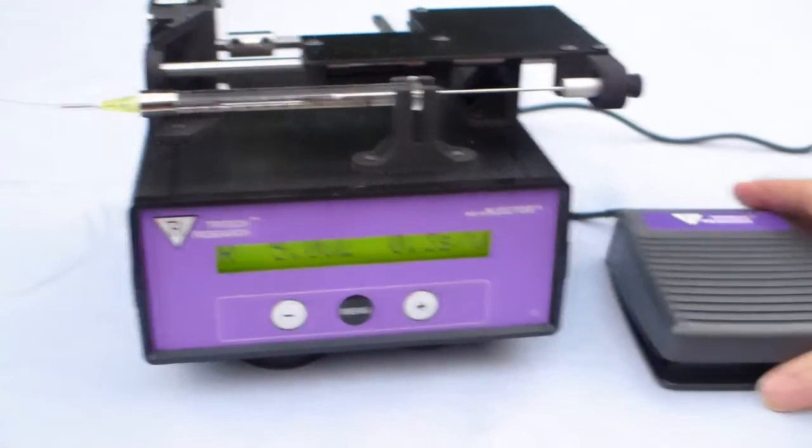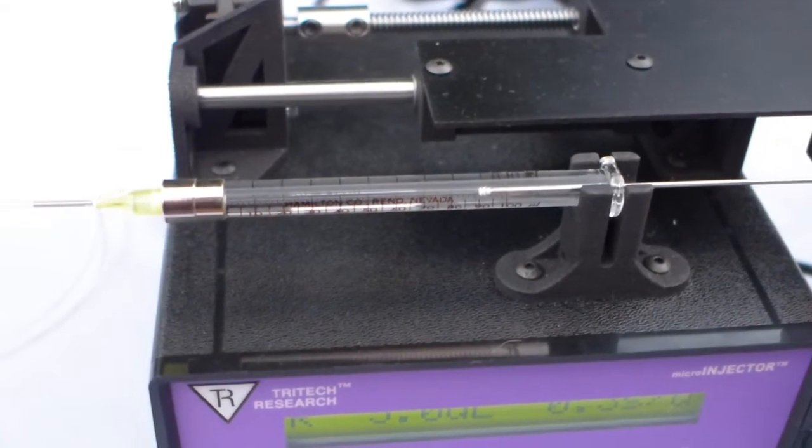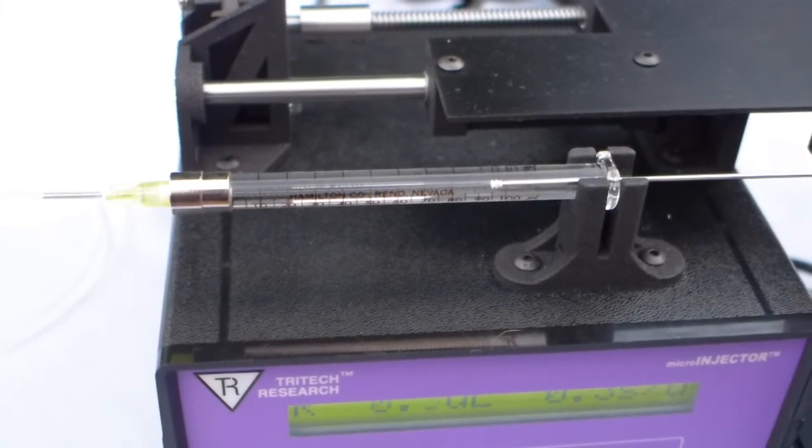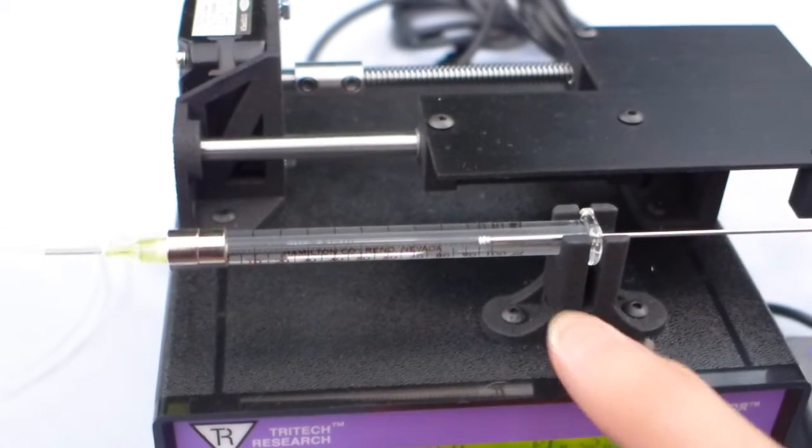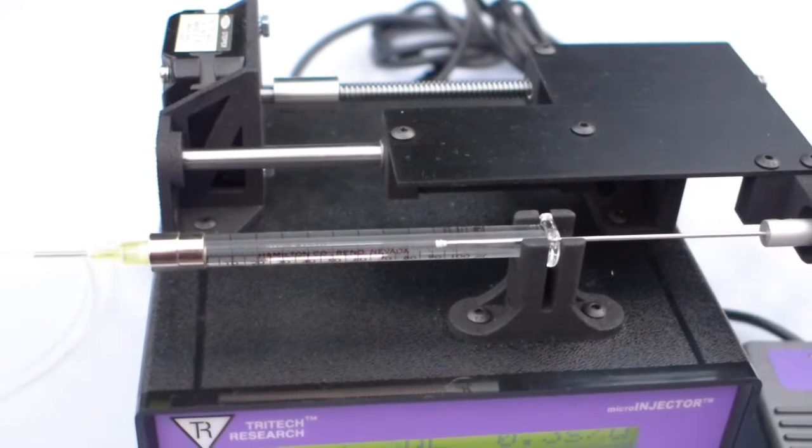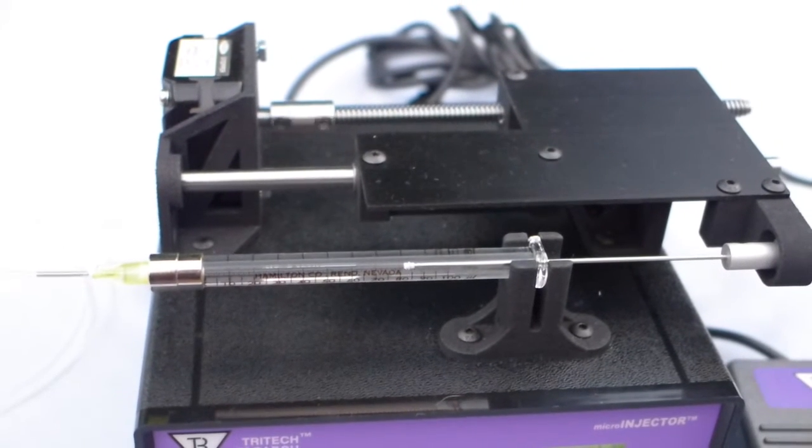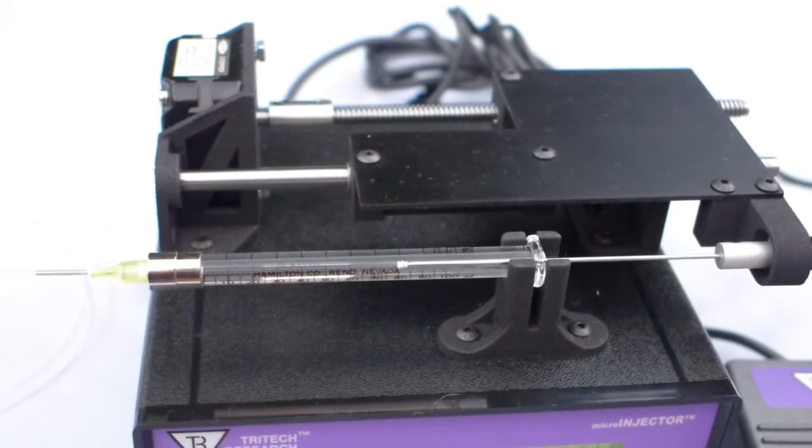It's controlled by a foot pedal. I'll push the foot pedal, and you can see the plunger in the syringe. That was reversing. Now I'll go forward. And each time I hit the foot pedal, it advances 5 microliters.